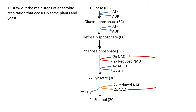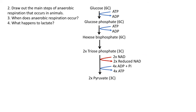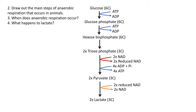Moving on to question two — for anaerobic respiration in animals, you should have drawn out glycolysis, and then in the case of pyruvate, it is reduced to produce lactate.